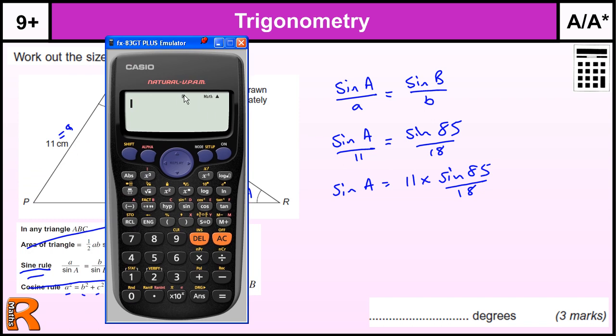Make sure I'm in degrees mode with a little D. Type in the value that I want, so 11 times the sine. That's going to be a fraction, so put the fraction in. Sine, 85, don't forget to close any brackets. All over 18. And that gives me the answer 0.60878, and so on.